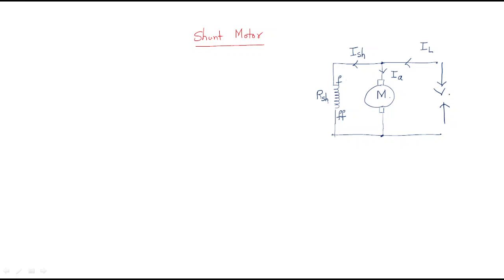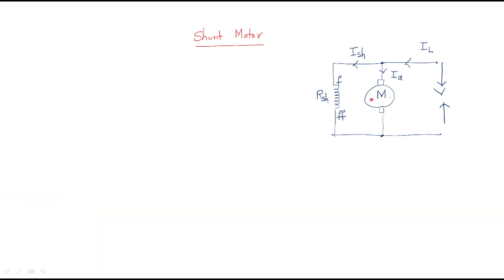When the electrical supply is given, the required field is produced by the shunt field and the motor rotates. The rotation is represented like this. A motor always rotates clockwise; a generator always rotates anti-clockwise.